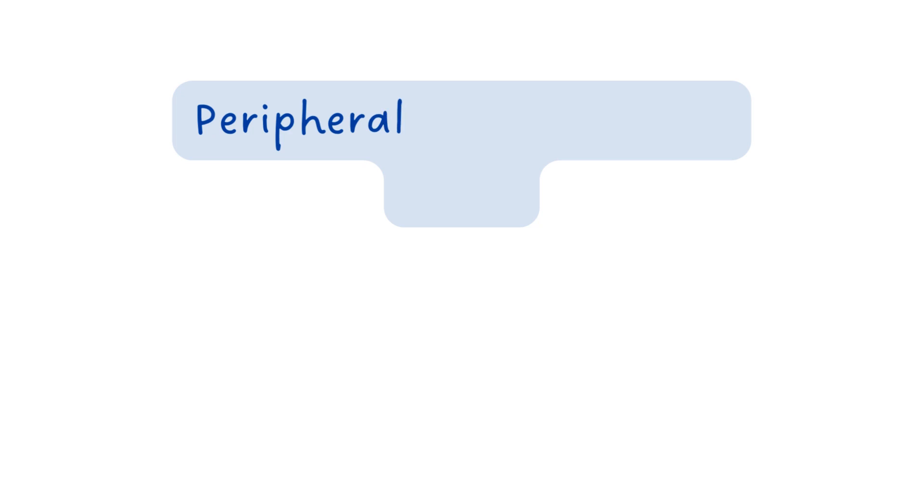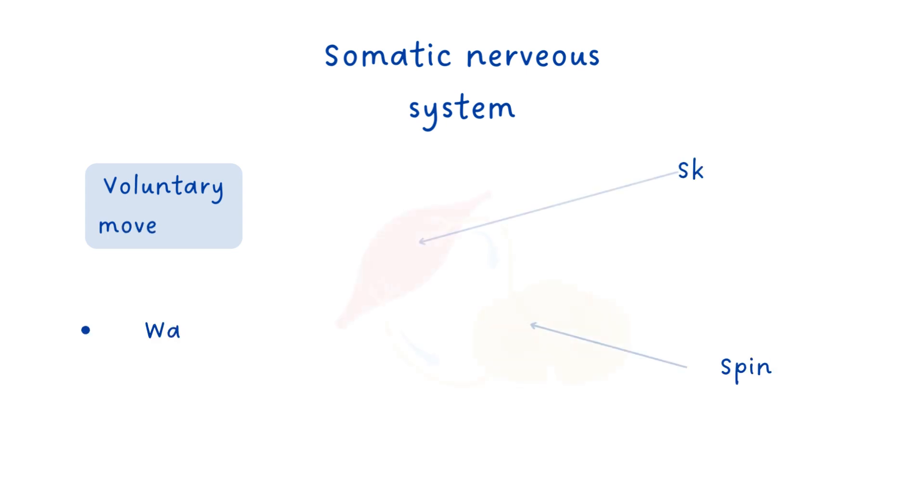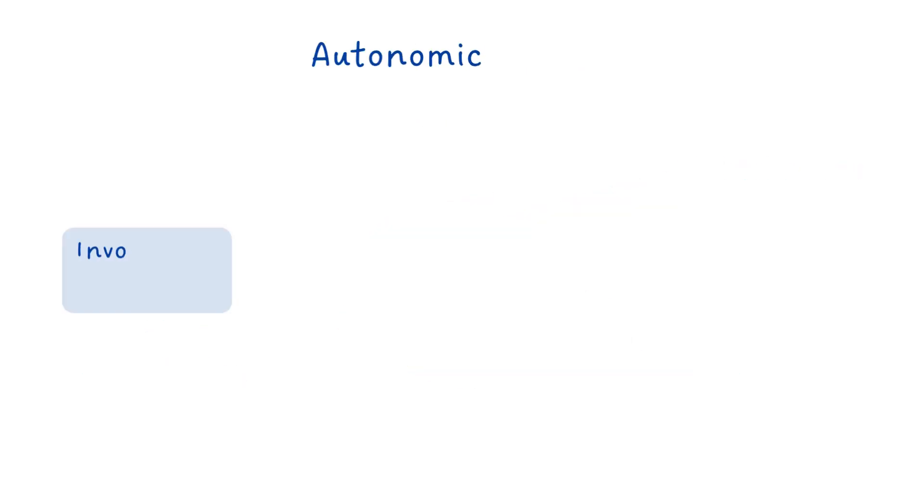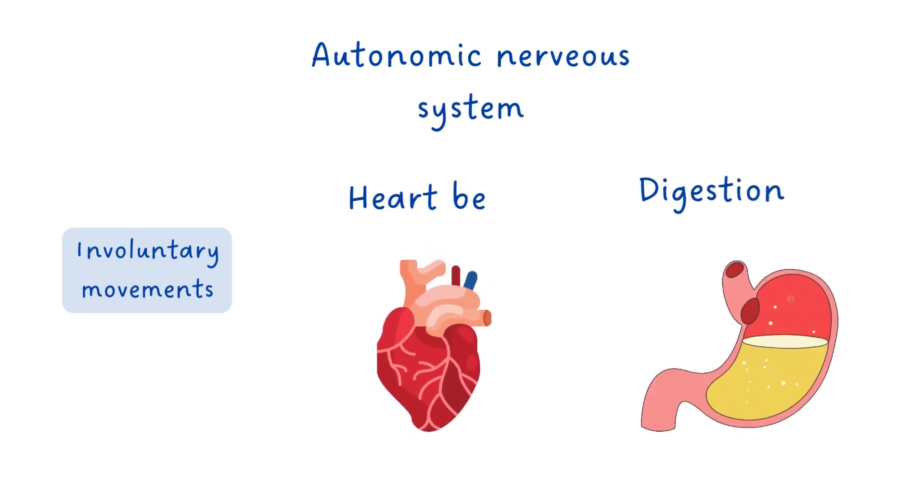The peripheral nervous system is divided into two parts: the somatic nervous system and the autonomic nervous system. The somatic nervous system is responsible for controlling voluntary movements, such as walking and talking. The autonomic nervous system is responsible for controlling involuntary movements, such as heartbeat and digestion.